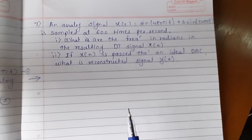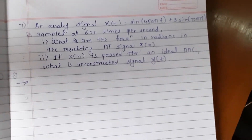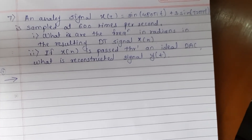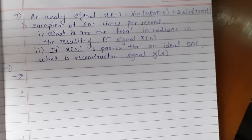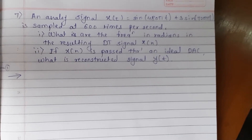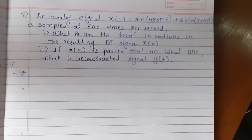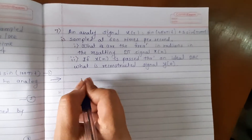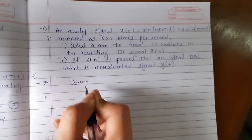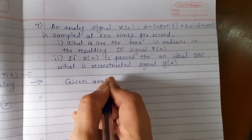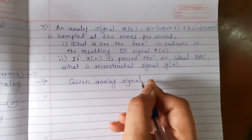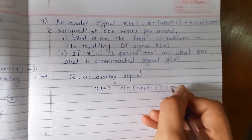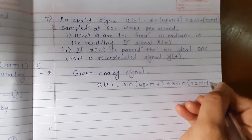The next problem: an analog signal x(t) = sin(480πt) + 3sin(720πt) is sampled at 600 samples per second. Find the frequencies in radians in the resulting discrete time signal x(n), and if x(n) is passed through an ideal DAC, find the reconstructed signal y(t). The given analog signal is x(t) = sin(480πt) + 3sin(720πt).